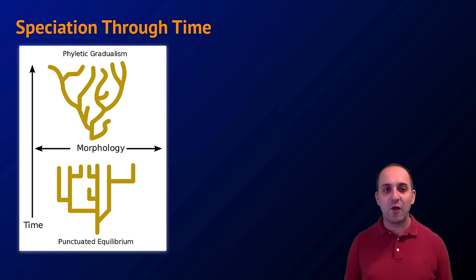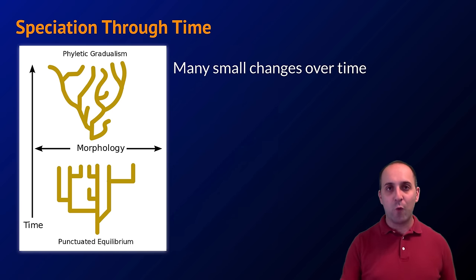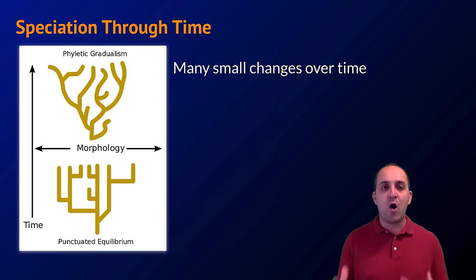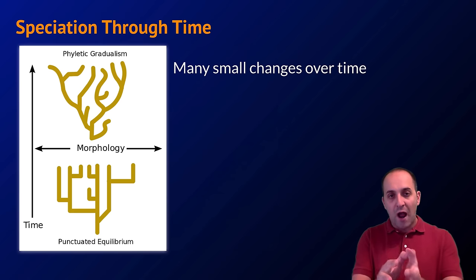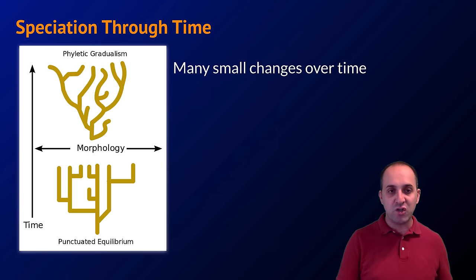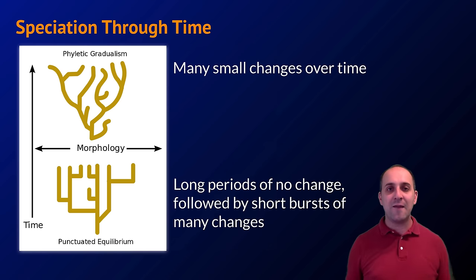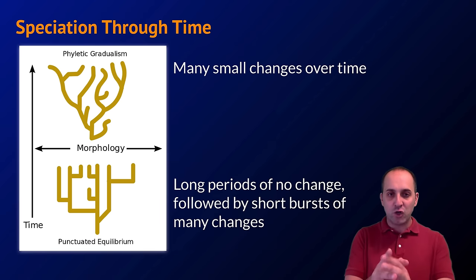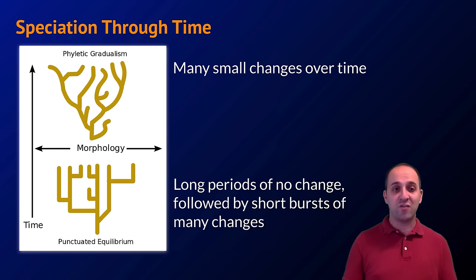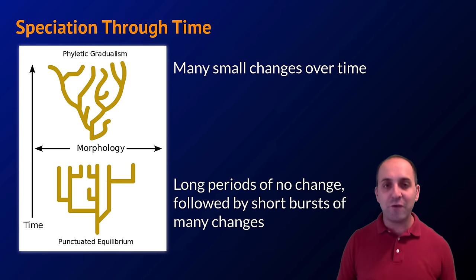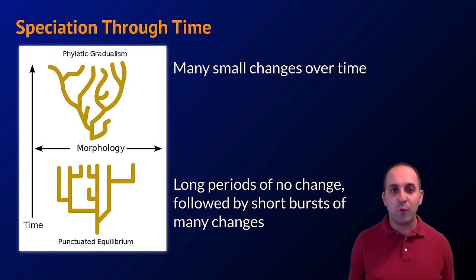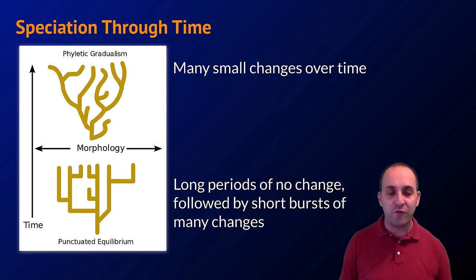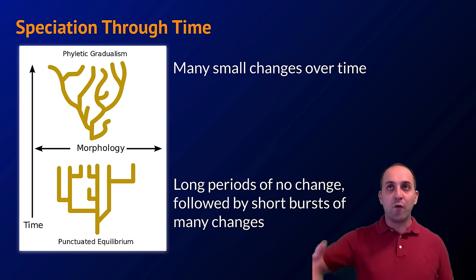Looking at how speciation occurs through geological time, there are two models. The first is gradualism — probably what you picture when you think of speciation: the accumulation of many small changes over a long period of time once a group is reproductively isolated, leading to the development of a species. The second is punctuated equilibrium: the changes that lead to a new species occur relatively rapidly in a short period of time, followed by a long period with very few changes until the next speciation event. There's evidence for both in the fossil record, and it's not really important to worry about which is 'correct' — they're just two different models.